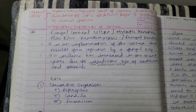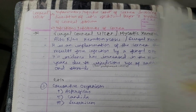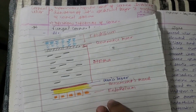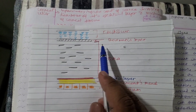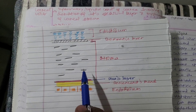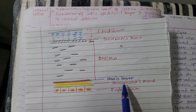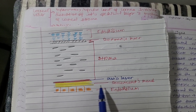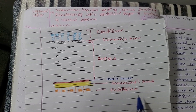As we know, the cornea has 6 layers: first is epithelium, second is Bowman's layer, third is stroma, fourth is Dua's layer, fifth is Descemet's membrane, and sixth is endothelium.